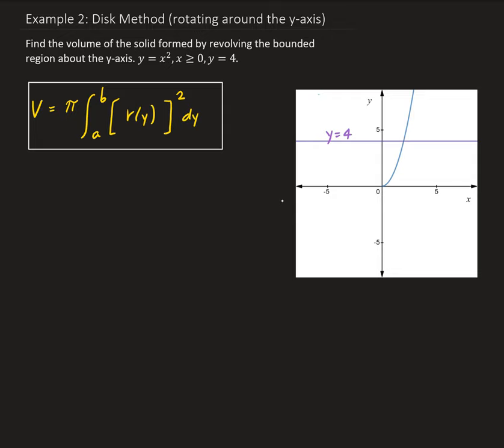So since we're using the disk method, our representative piece is going to be perpendicular to the axis of revolution, and our axis in this case is the y-axis. So that is the axis that we're going to take this region and revolve around. When we take that region and revolve it around the y-axis, it's going to look something like this, like a bowl.